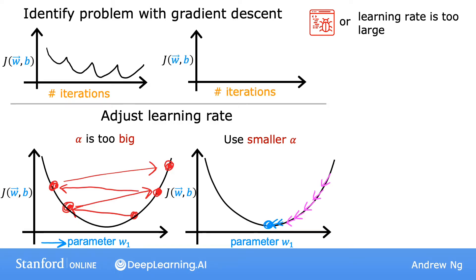Sometimes you may see that the cost consistently increases after each iteration, like this curve here. This is also likely due to a learning rate that is too large and could be addressed by choosing a smaller learning rate. But learning rates like this could also be a sign of a possible bug in the code. For example, if I wrote my code so that w1 gets updated as w1 plus alpha times this derivative term, this could result in the cost consistently increasing at each iteration. This is because adding the derivative term moves your cost j further from the global minimum instead of closer.